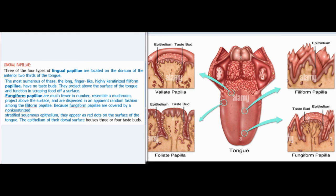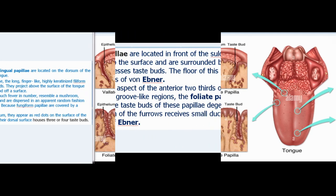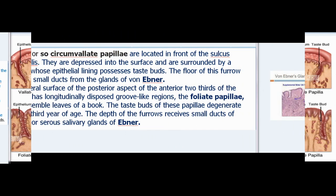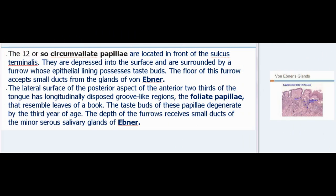The epithelium of the dorsal surface of fungiform papillae houses three or four taste buds. The twelve or so circumvallate papillae are located in front of the sulcus terminalis; they are depressed into the surface and surrounded by a furrow whose epithelial lining possesses taste buds. The floor of this furrow accepts small ducts from the glands of von Ebner.